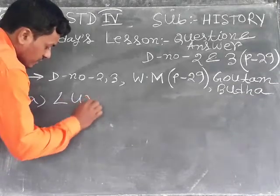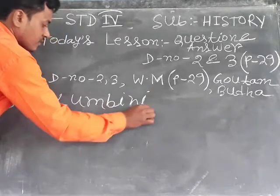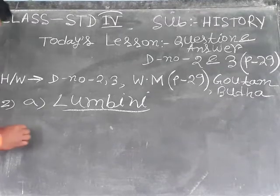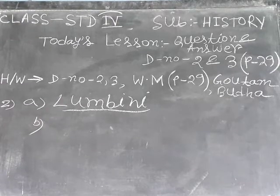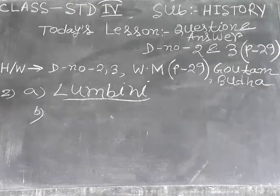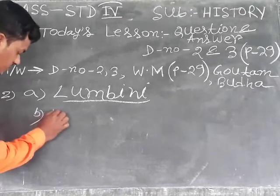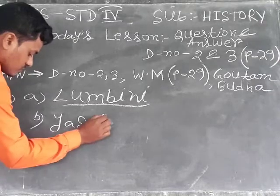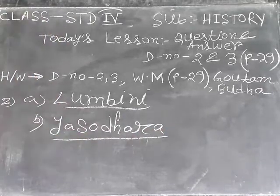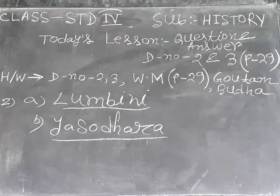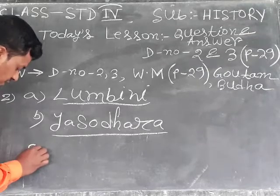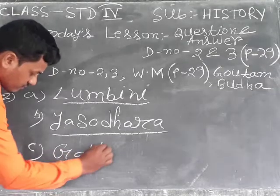Second question. A, U, M, B, I, N, I. Lumbini. Siddhartha married. Siddhartha A, U, B and K.